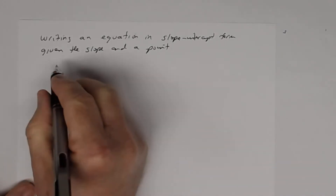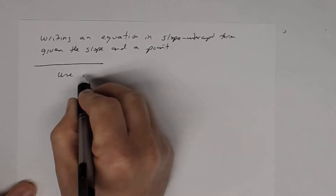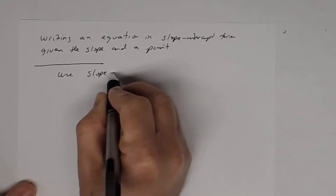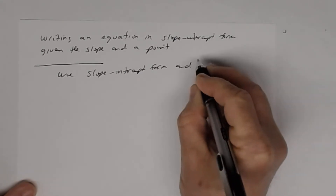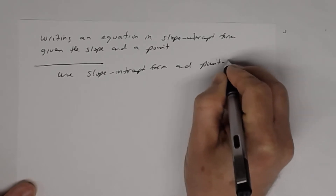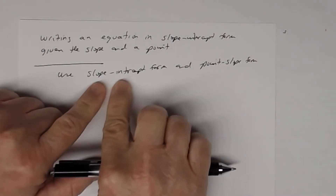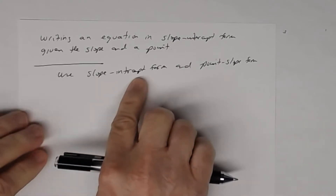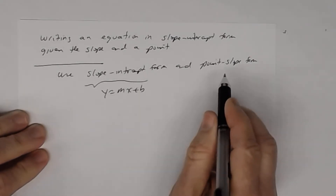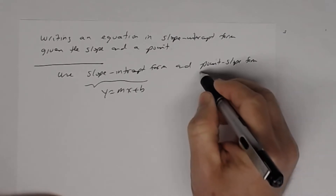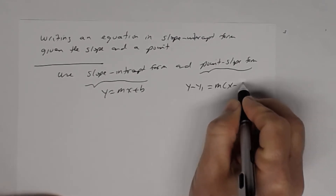As you go through this, you're going to notice that we can use two ideas: slope-intercept form and point-slope form. Slope-intercept form is y equals mx plus b. Point-slope form is y minus y1 equals the slope times x minus x1.